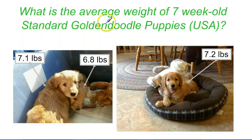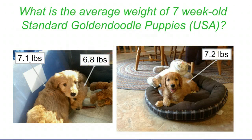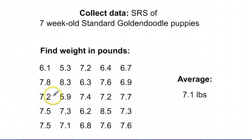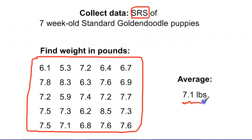So let's go back to that question: the average weight of 7-week-old standard golden doodle puppies in the United States. Here we have a few golden doodles — Nitro, Surly, and Kaya — and they weigh in at 7.1, 6.8, and 7.2 pounds. If you were to take a survey and got a simple random sample of 25 of these 7-week-old golden doodle puppies, here are their weights.